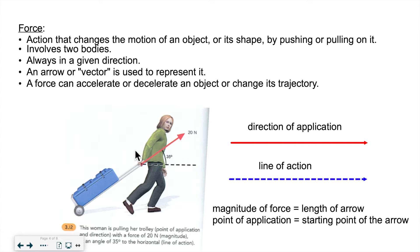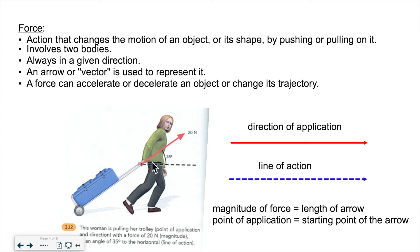For example, there's a lady here who is pulling a suitcase. She's applying the force on the suitcase, which is receiving the force. The force changes its motion, and it's always given in a specific direction. We use an arrow, also called a vector, to represent in which direction the action is happening. The red arrow shows the person is pulling diagonally, but the movement of the suitcase may be in a different direction because of gravity.